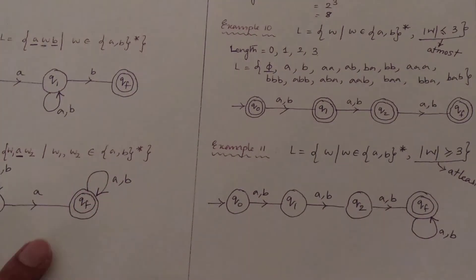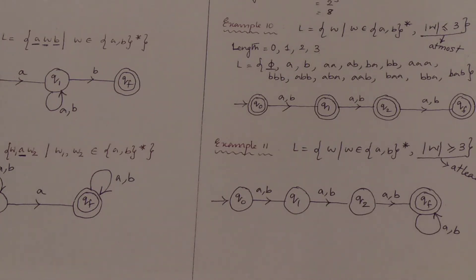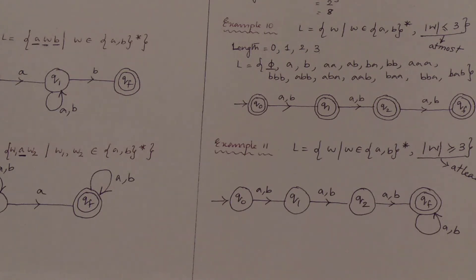So these are all the NFA construction questions covered in this video: length exactly equal to 3, length at most 3 (less than or equal to 3), and length at least 3 (greater than or equal to 3). Thank you for watching. I have explained all the different kinds of examples and will bring more after completing unit 1 — a summary of 20 to 25 numericals. In the next lecture, I will explain Epsilon NFA and how to convert an Epsilon NFA to a regular NFA.